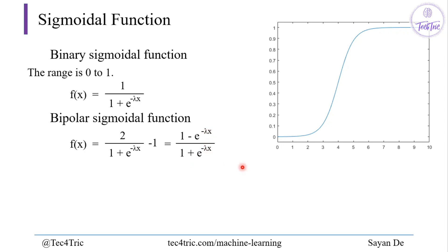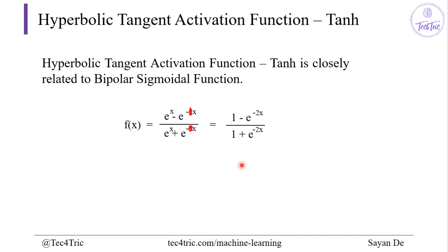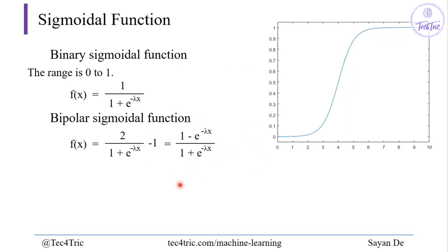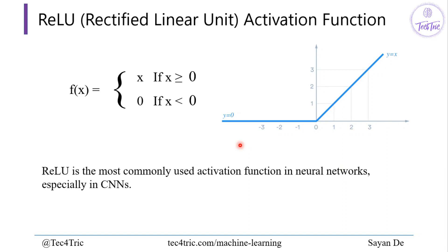Next we have the hyperbolic tangent activation function, or tanh. Tanh is closely related to the bipolar sigmoidal function. It is defined as f(x) = (e^x − e^(−x)) / (e^x + e^(−x)). Dividing each term by e^x gives (1 − e^(−2x)) / (1 + e^(−2x)), which is the same form as the bipolar sigmoidal function.